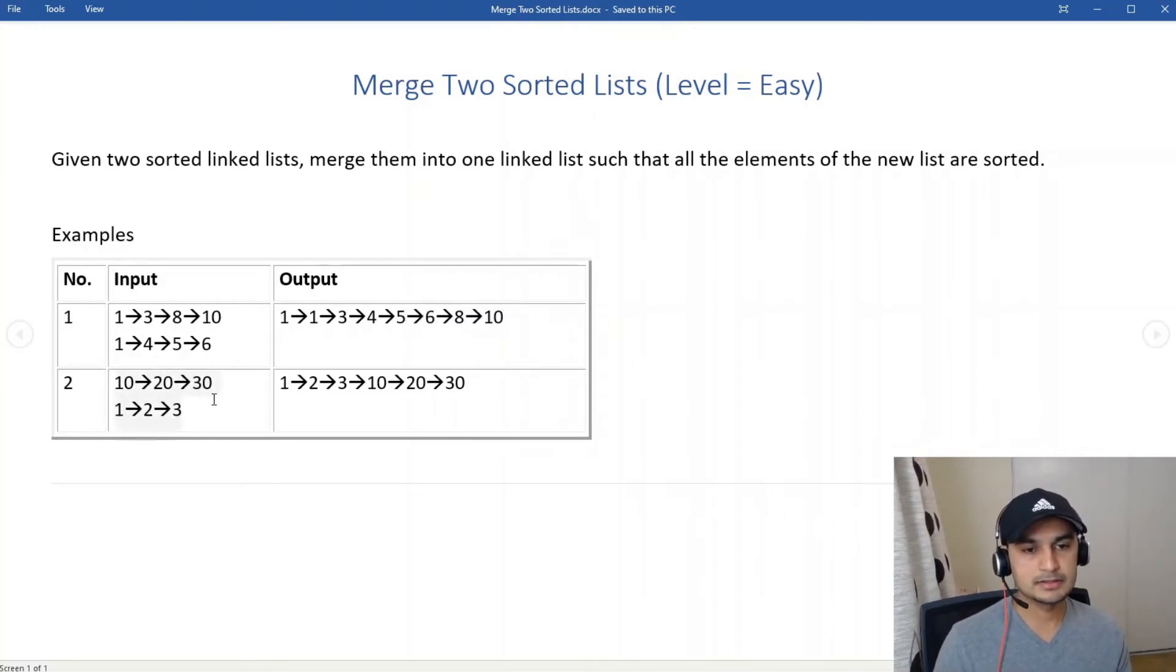Second example: list one is 10, 20, 30. List two is 1, 2, 3. So our merged list is 1, 2, 3, 10, 20, 30. Straightforward problem description, and I'm sure the solution is also straightforward.